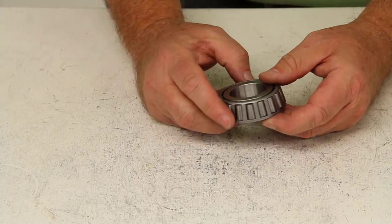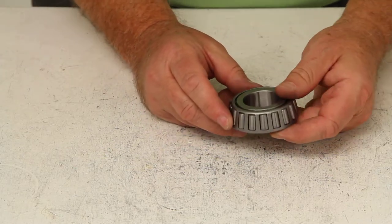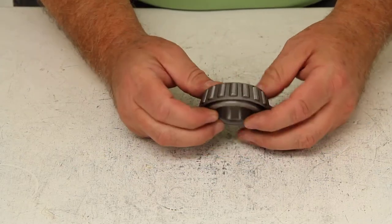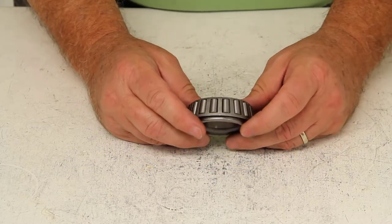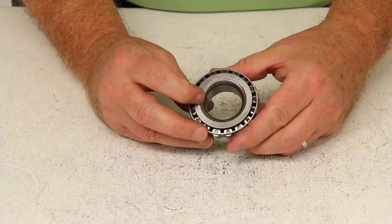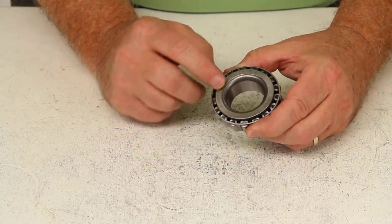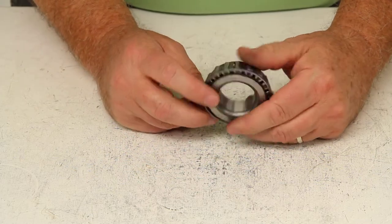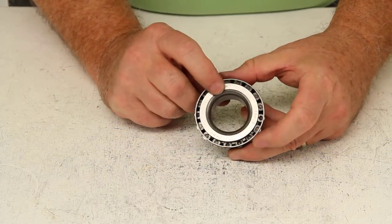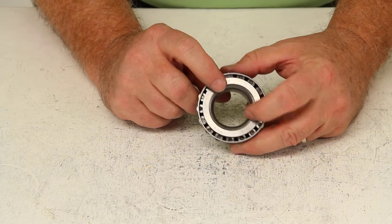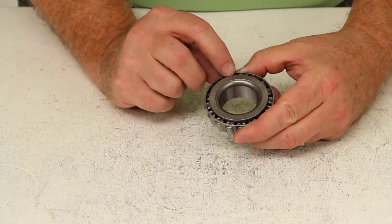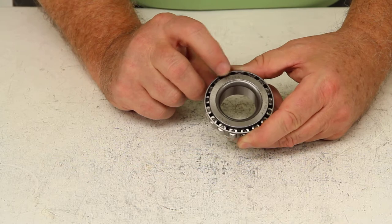All bearings have an industry standard number stamped on them regardless of the brand. So when you go to replace your trailer bearings, what you would want to do is normally look on the inner ring of your bearing. There should be a number stamped there. For this one it would show 14125A, which is the part number.